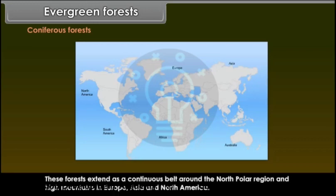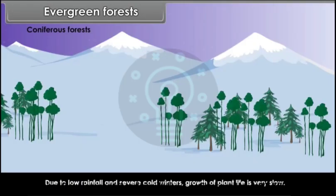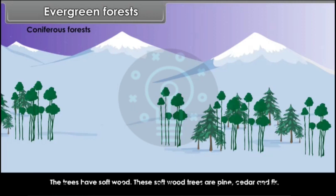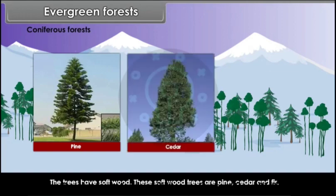Coniferous forests extend as a continuous belt around the North Polar region and high mountains in Europe, Asia and North America. Due to low rainfall and severe cold winters, plant growth is very slow. Trees are evergreen with small needle-like leaves to reduce transpiration and protect from cold. The trees have soft wood — pine, cedar and fir.